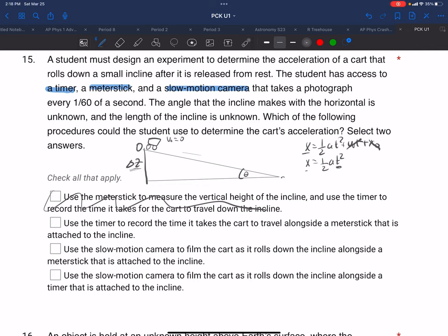Next, it says to use the timer to record the time it takes for the cart to travel alongside a meter stick that's attached to the incline. So we put the meter stick along the edge and we record it at different times. Well, that's going to give us x's and that's going to give us t's. So that looks correct.